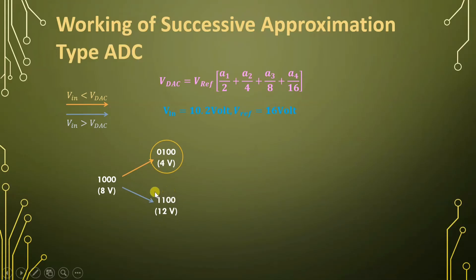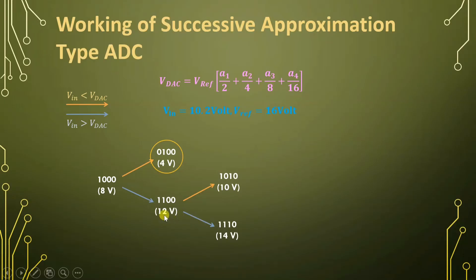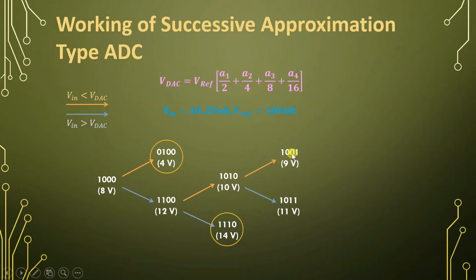In the next clock, the register data becomes 1100, making VDAC = 12 V. Now VIN = 10.2 V and VDAC = 12 V, so VDAC is greater than VIN. Therefore, this bit is set to 0 and the next bit is set to 1, giving data 1010 and VDAC = 10 V. Now VIN = 10.2 V is greater than VDAC = 10 V, so we hold that condition and set the next bit to 1, giving data 1011 and VDAC = 11 V. Again VDAC is greater than VIN, so that condition is false.